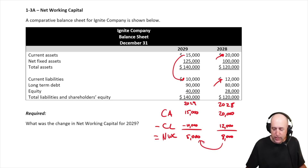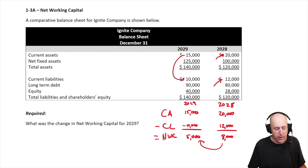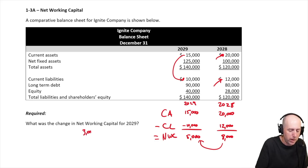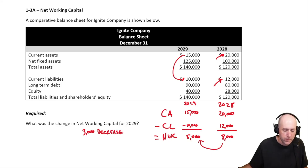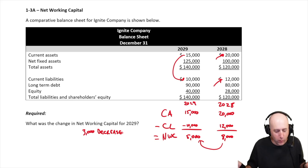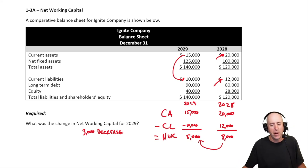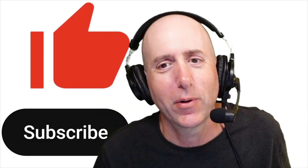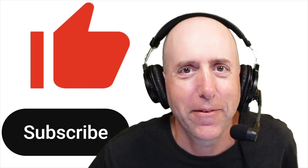So what was the change in net working capital? We went from $8,000 down to $5,000 — it decreased by $3,000. That's our answer for problem 1-3a: the change in net working capital decreased by three thousand dollars. An easy problem — and thanks so much for watching, have a great day!